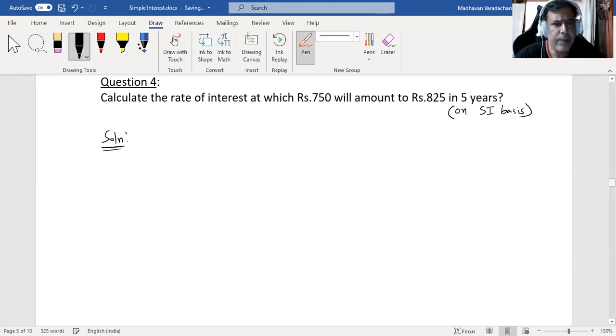Now what we are supposed to find is the rate of interest, which is i. The principal amount or initial capital investment is 750, which will amount to the final amount of 825, and the period n is known to be 5. So we are supposed to find what is i.